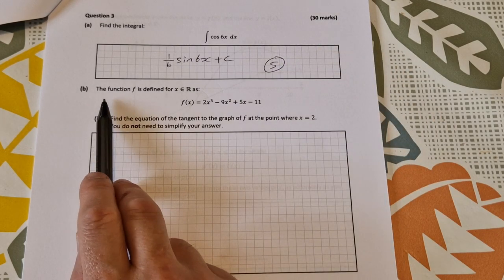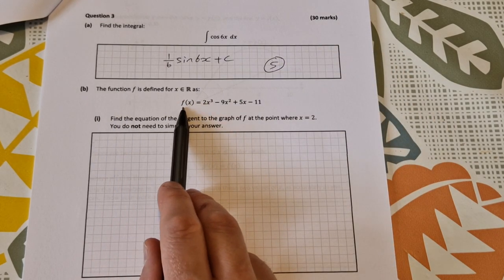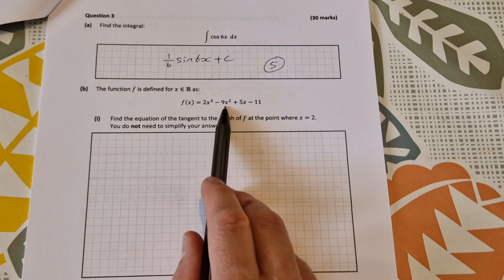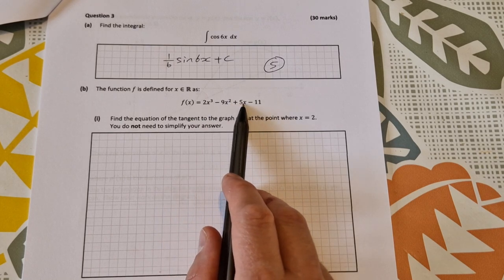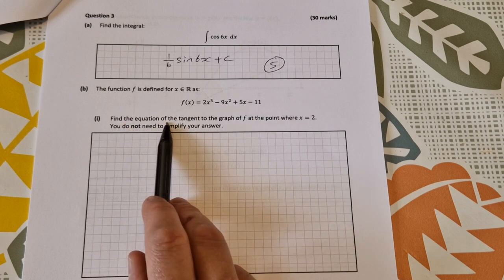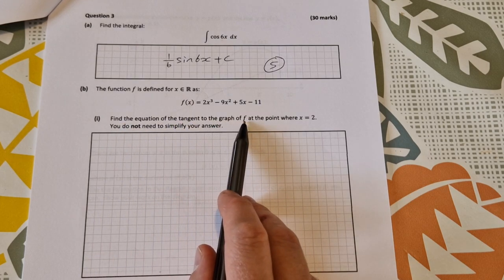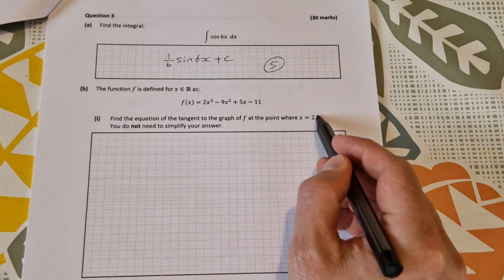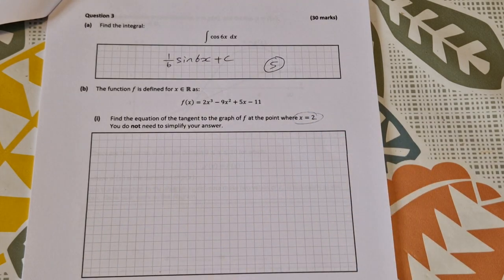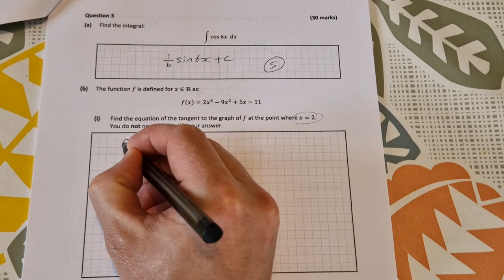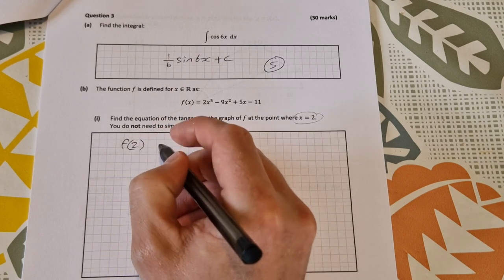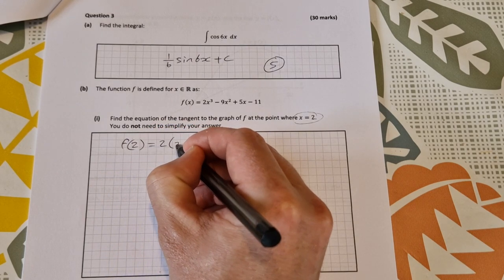Part B: The function f is defined as f(x) = 2x³ - 9x² + 5x - 11. Find the equation of the tangent to the graph of f at the point where x equals 2. You do not need to simplify your answer. So we're looking for the equation of the tangent. Using the equation of the line formula, we need the slope and we need a point. We can find the point first by doing f(2).